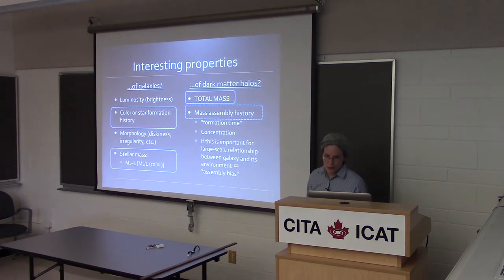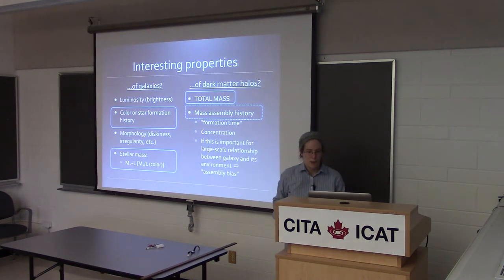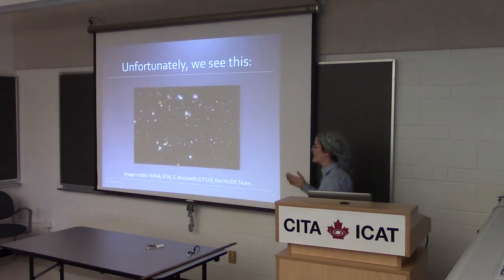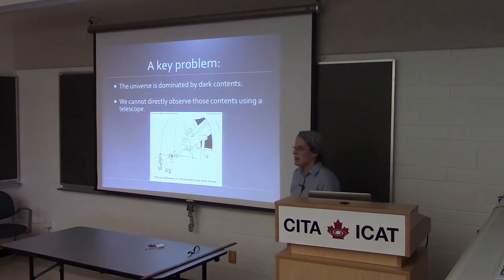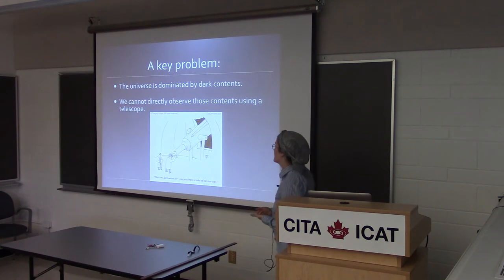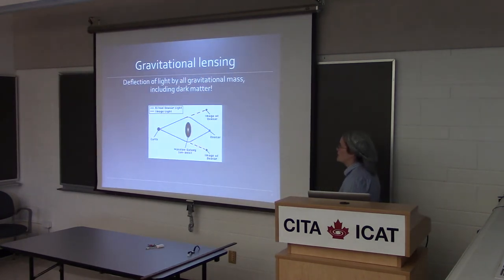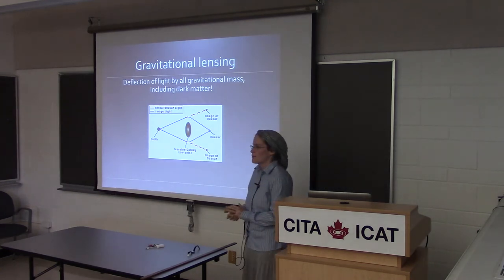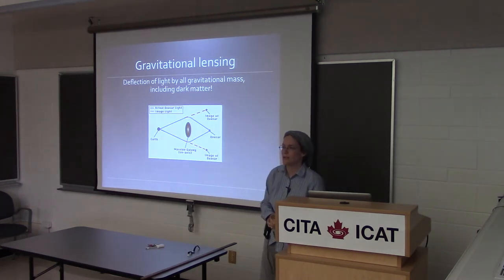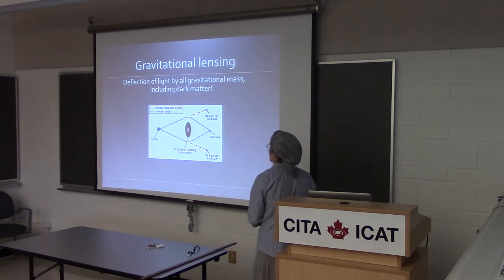Of course, if we're trying to answer questions about how does the visible stuff relate to the dark stuff, the difficult thing is that we only see the visible stuff. So we need some way of measuring the dark contents of the universe and relating them back to the light that we see. The type of measurement I use is gravitational lensing — the deflection of light by gravitational mass. Gravitational lensing is an excellent way to infer the presence of dark matter.